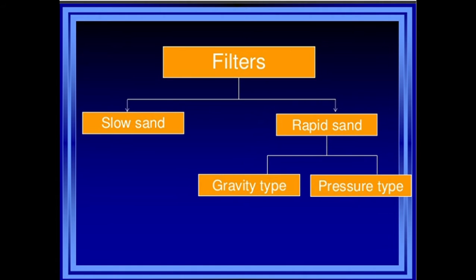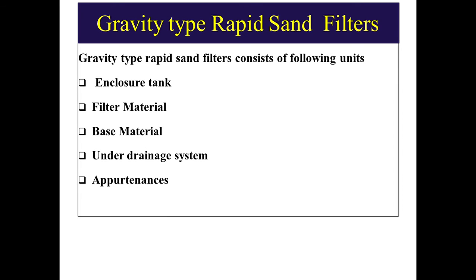In gravity type filters, the filter medium is coarser than that of the slow sand filters. In pressure type filters, water is allowed to filter under pressure through the filter media. Nowadays, slow sand filters are obsolete because the rate of filtration is very slow and the area required is very large, which is not economical.